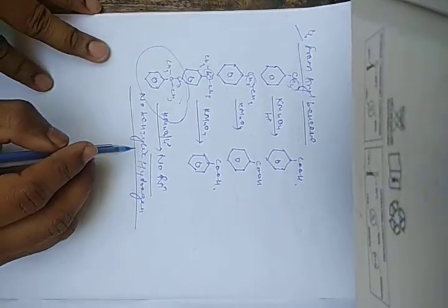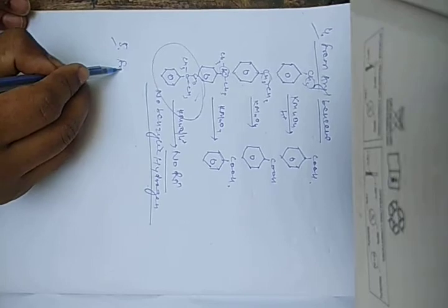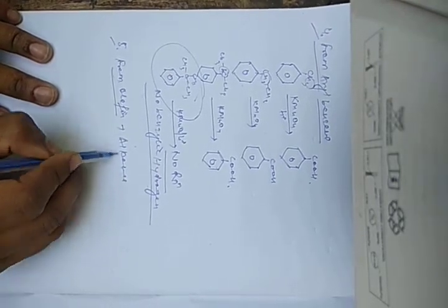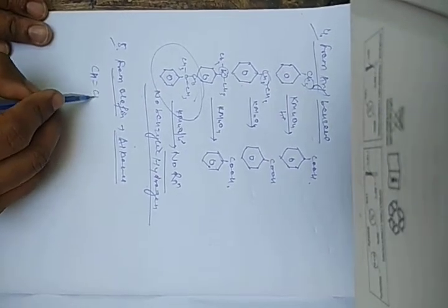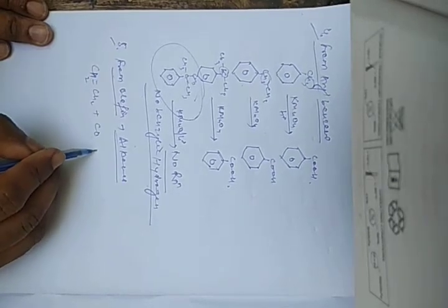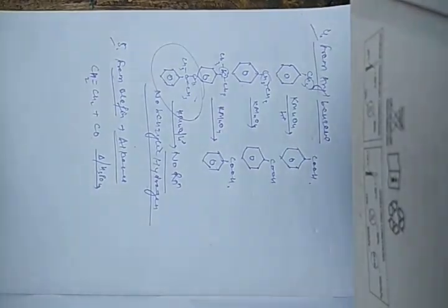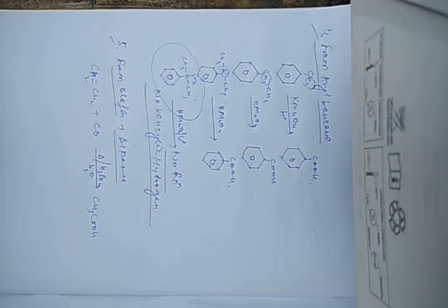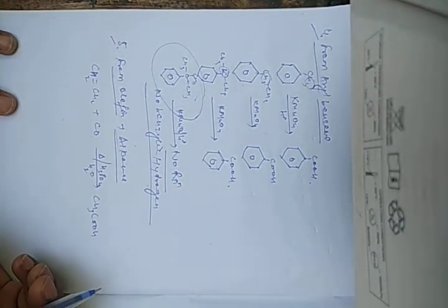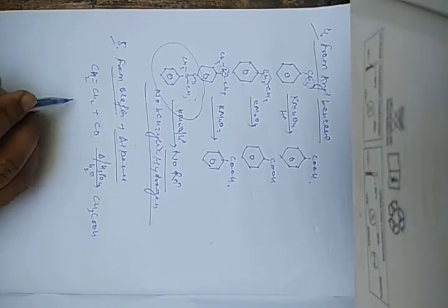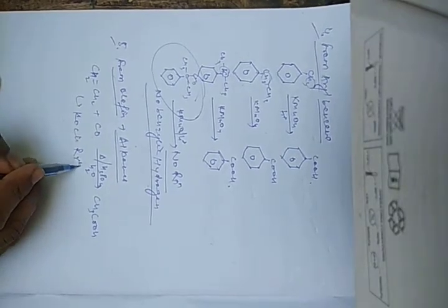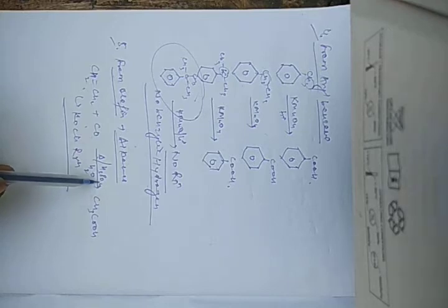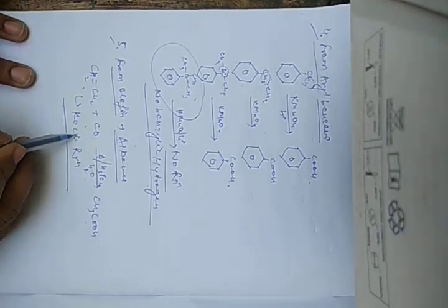Another method is from olefins — that is, alkenes. Suppose this is your alkene. If you pass carbon monoxide gas at some pressure in phosphoric acid and water, it will get converted into carboxylic acid. This reaction is also known as the Koch reaction — the conversion of an olefin in the presence of carbon monoxide at some temperature in the presence of phosphoric acid and water gives carboxylic acid.